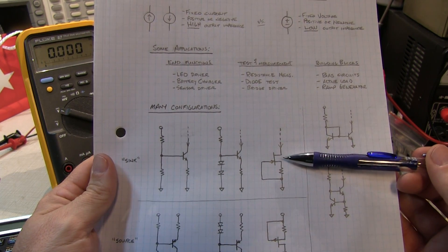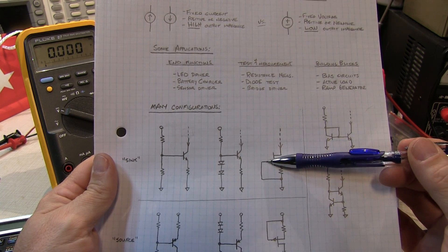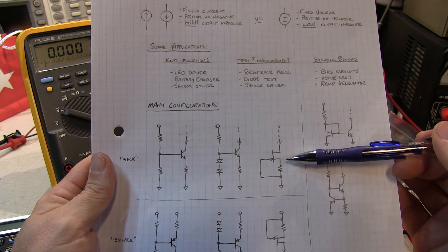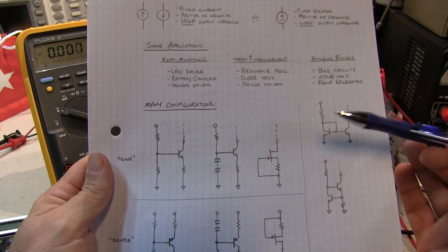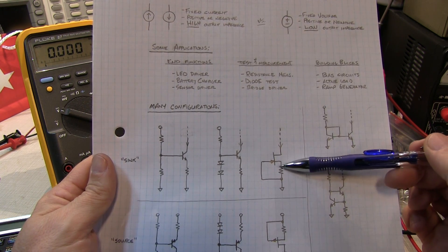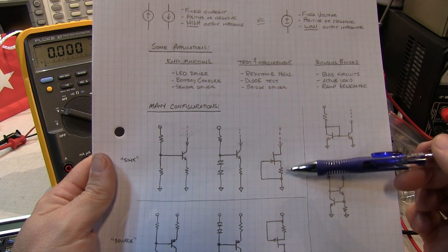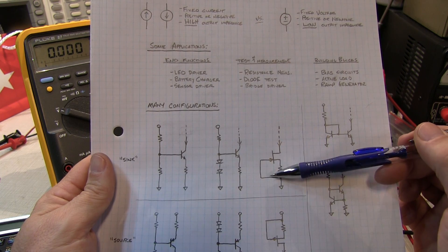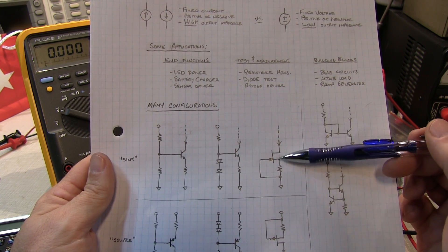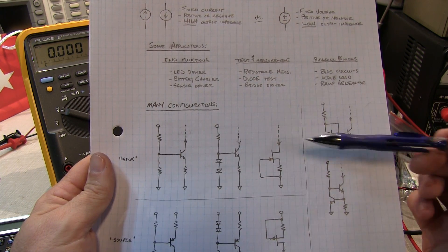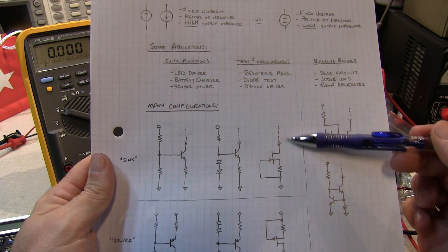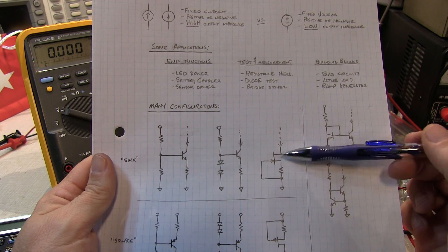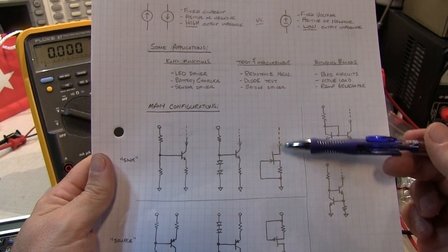Here's a simple configuration with a JFET. When the gate is directly shorted to the source, the current flowing through the FET is essentially the maximum operating current for that JFET — called IDSS — which is typically larger than you'd want. So if you want to reduce that current, you simply put a resistor in series and connect the gate down there. As current flows, it creates a voltage drop which increases the negative bias of the gate with respect to the source, reducing the current. By selecting that resistor, you can set up a fixed current with just two components.